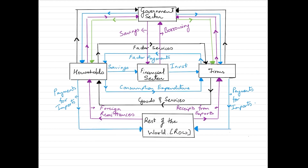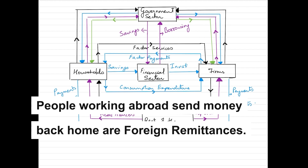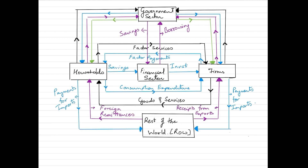The opposite real flow goes from the rest of the world to households in terms of the imports they are making. The same applies to firms, which make payments for imports from the rest of the world in the form of raw materials, equipment, and technical know-how. Another flow from the rest of the world is foreign remittances received by households — when people working abroad send money back home, that is called foreign remittances.